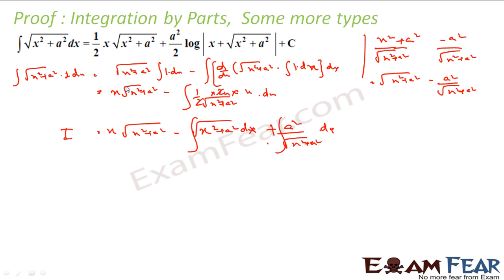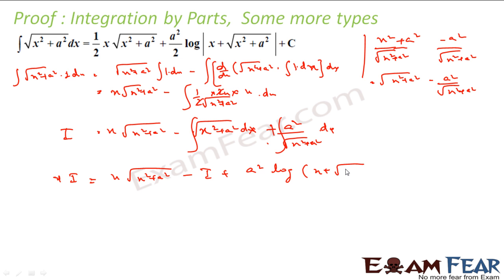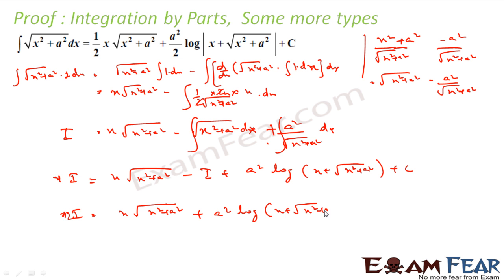The term −∫√(x²+a²) dx is −I, and ∫a²/√(x²+a²) dx = a²·log(x + √(x²+a²)). So 2I = x·√(x²+a²) + a²·log(x + √(x²+a²)), giving I = (x/2)√(x²+a²) + (a²/2)·log(x + √(x²+a²)) + C.